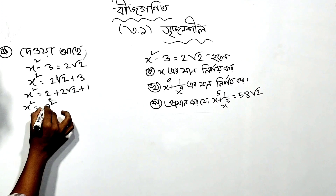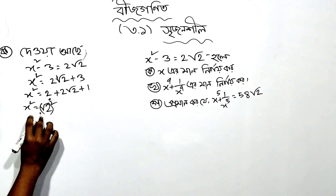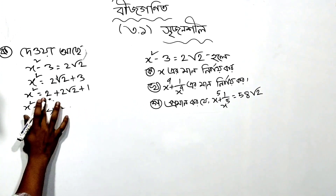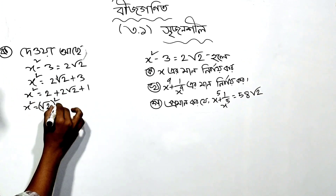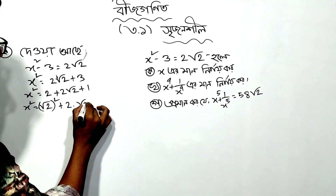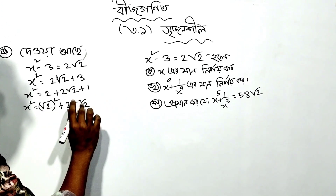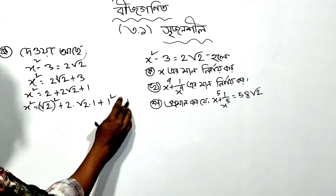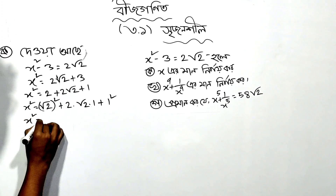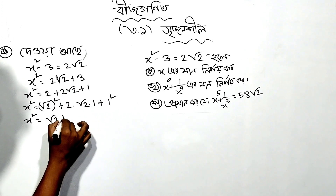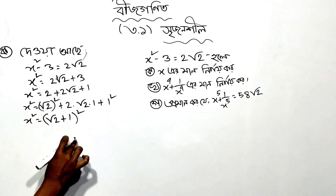Now, using the algebraic identity: a plus b squared equals a squared plus 2ab plus b squared. So x squared equals a squared plus 2ab plus b squared. This is the expansion we will apply to the problem.